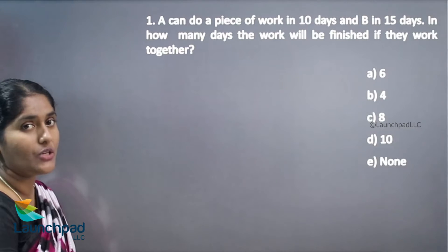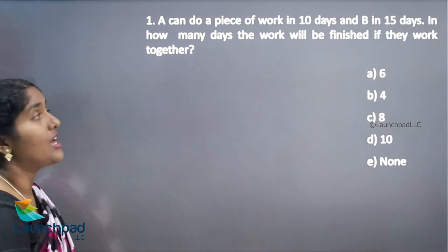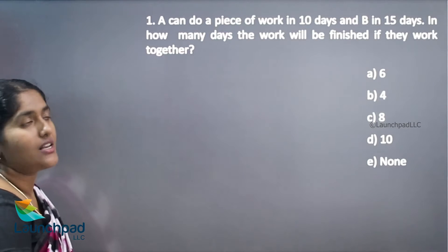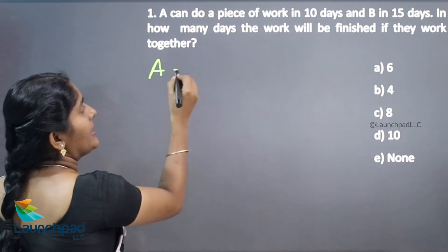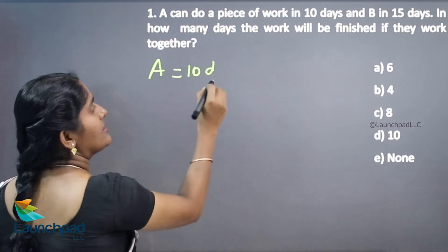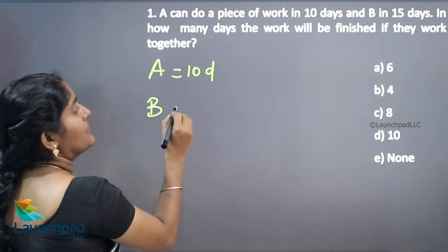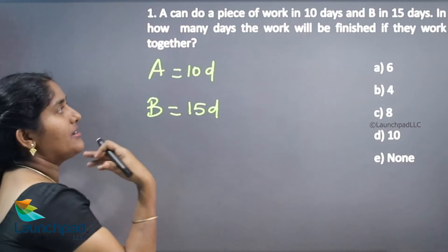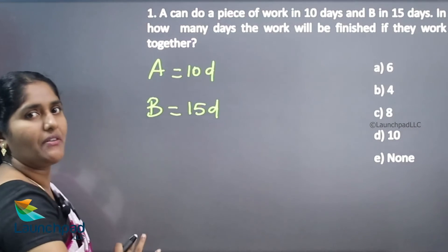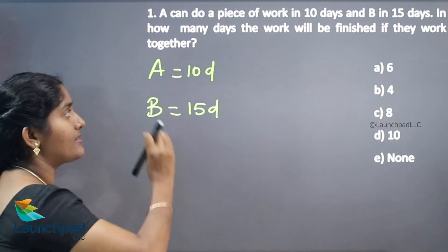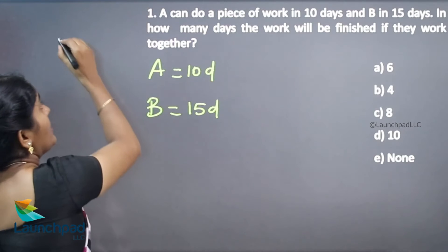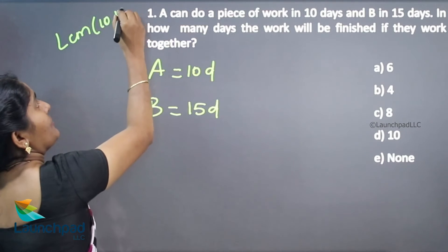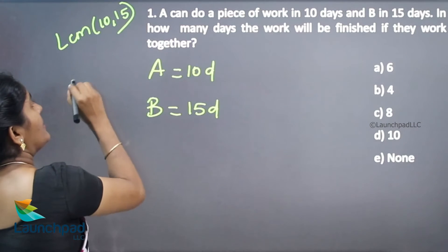I am going to tell you one shortcut. You can take the LCM for the given days. Here A can take 10 days, B can take 15 days. For this type of question, you want to take the LCM for given days. What is the LCM? LCM of 10, 15 is 30.